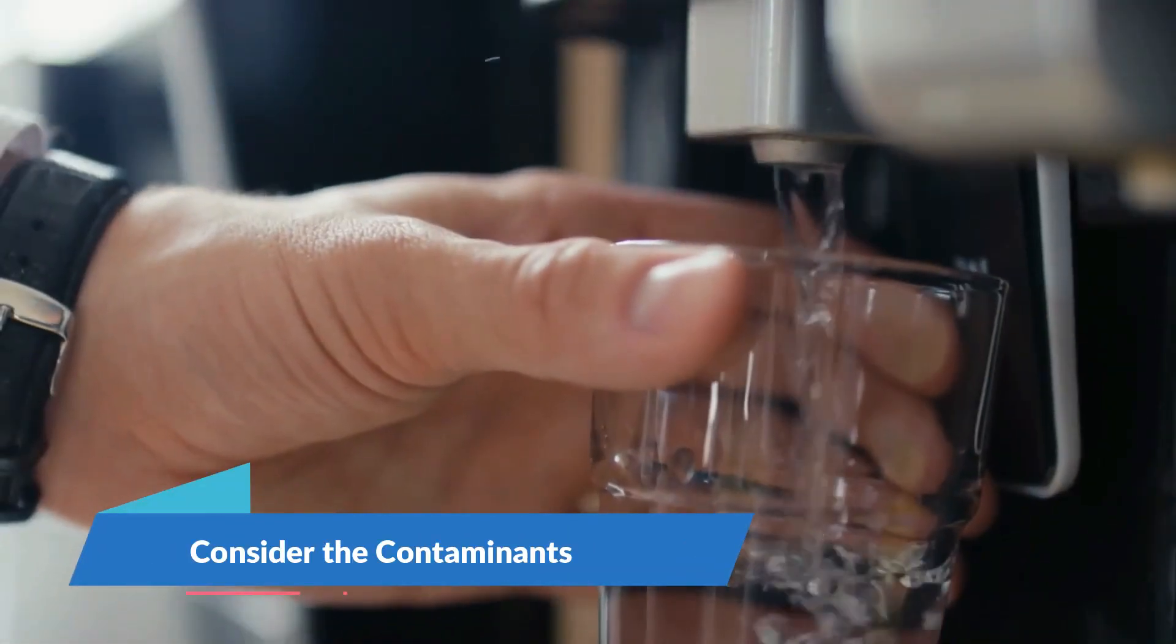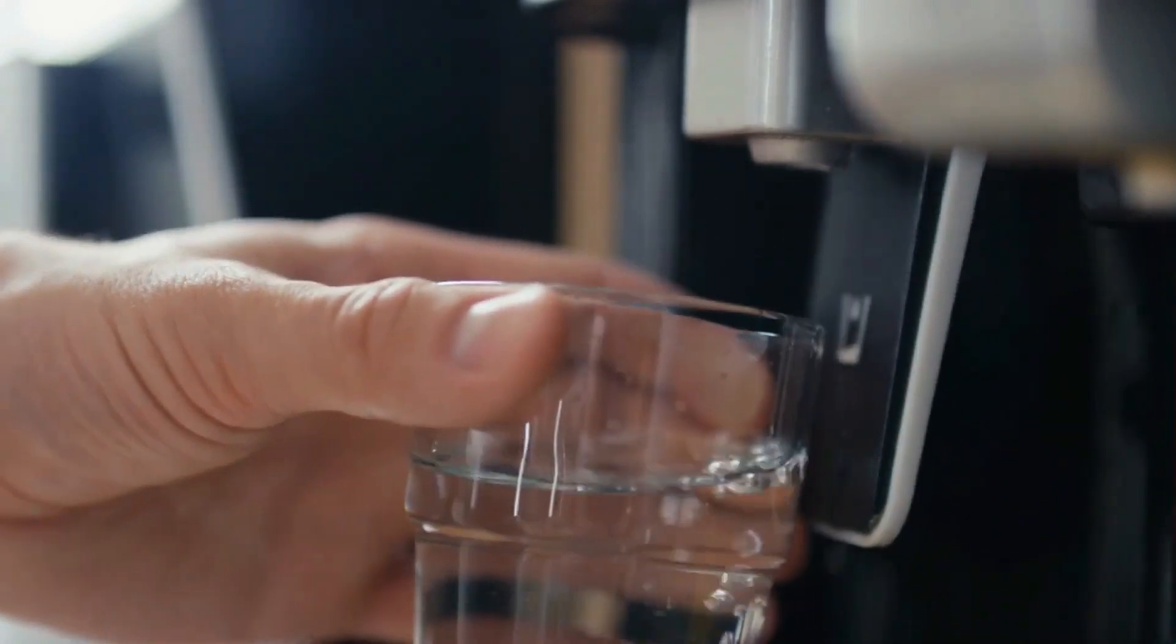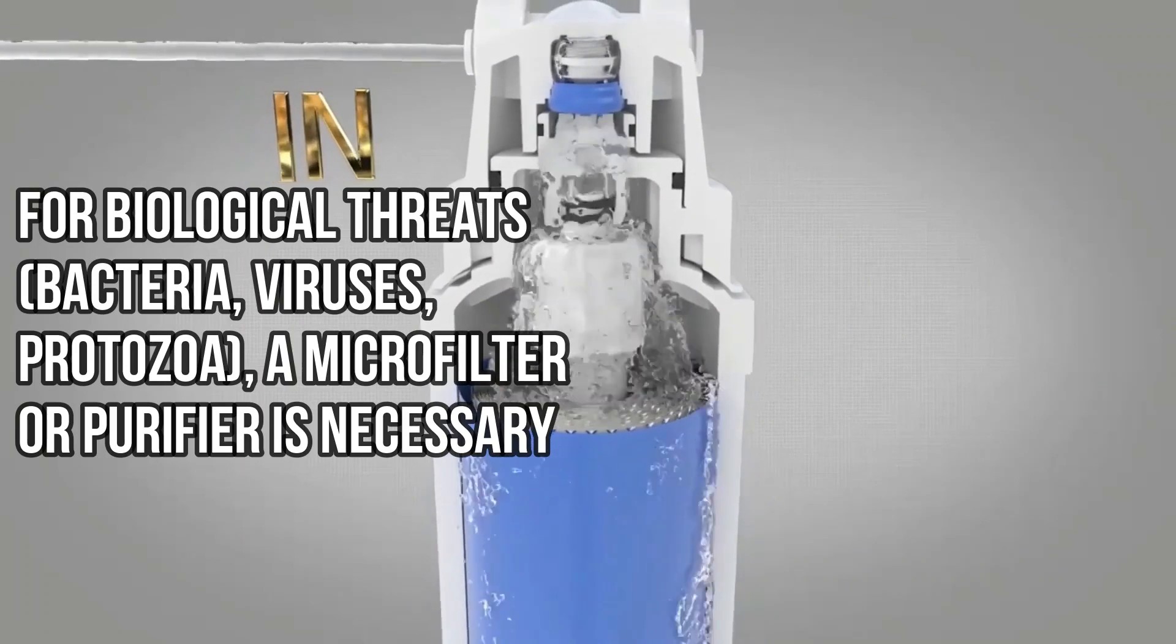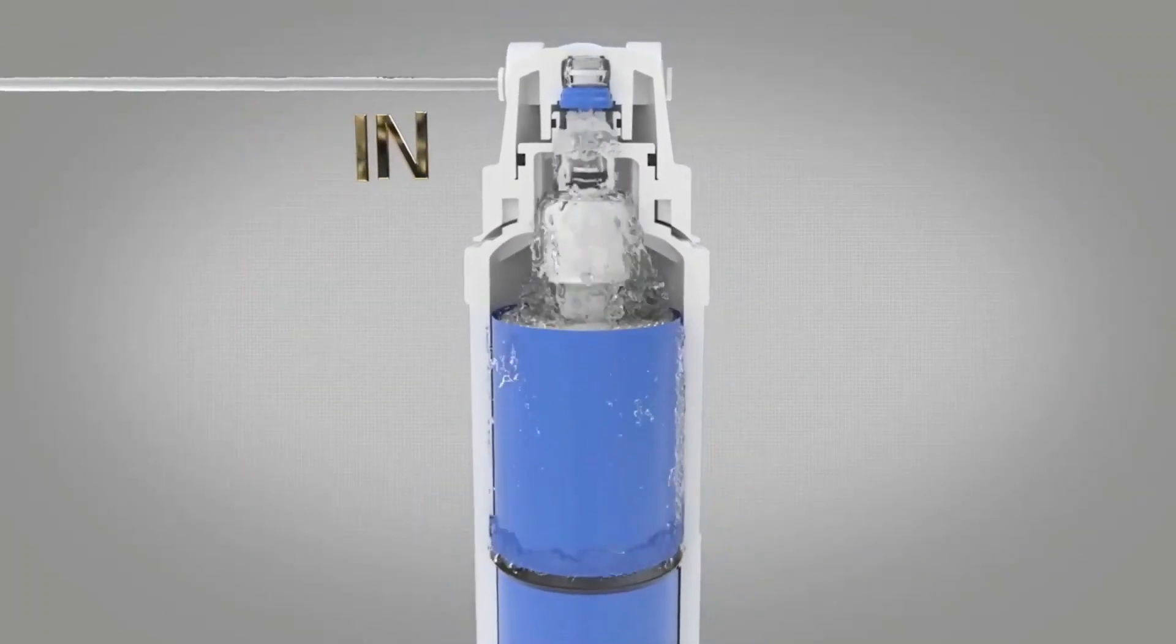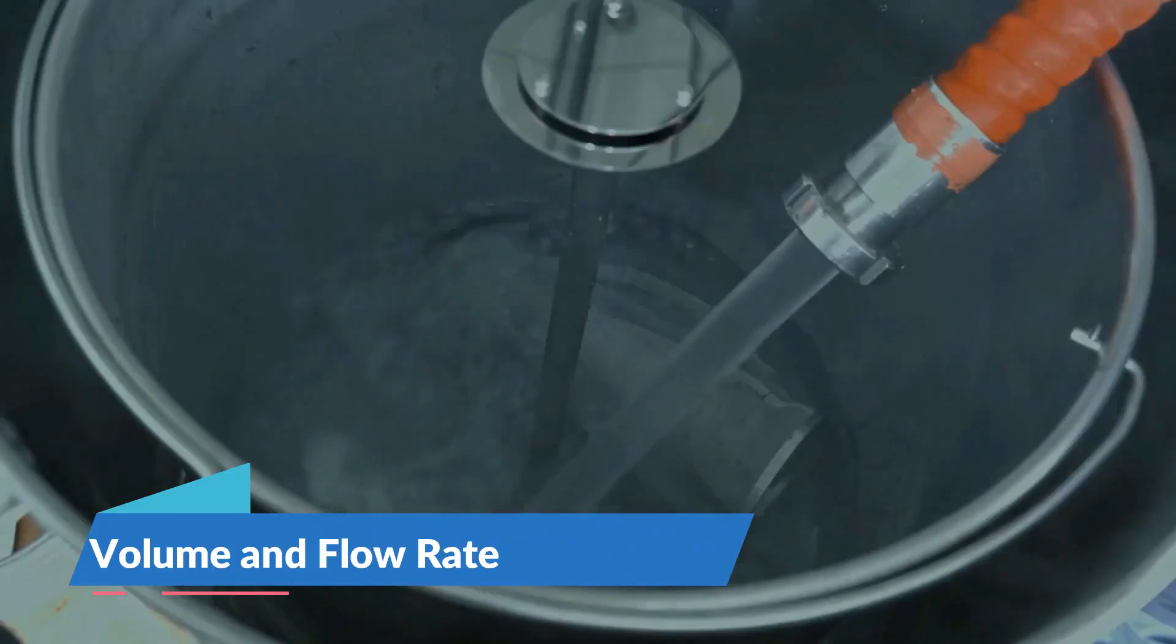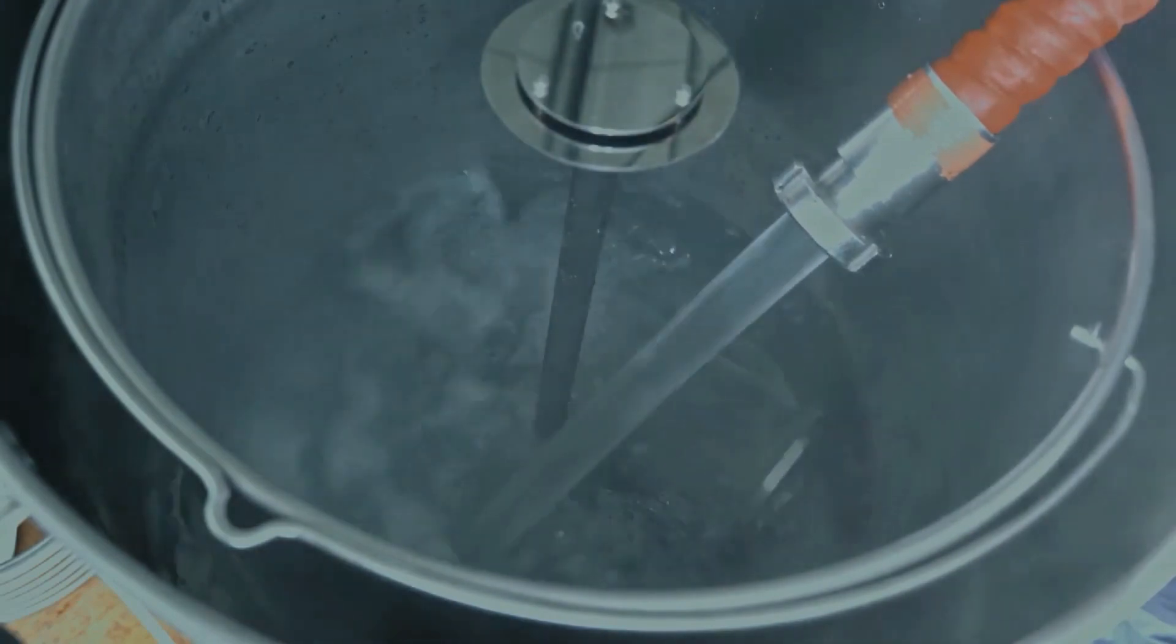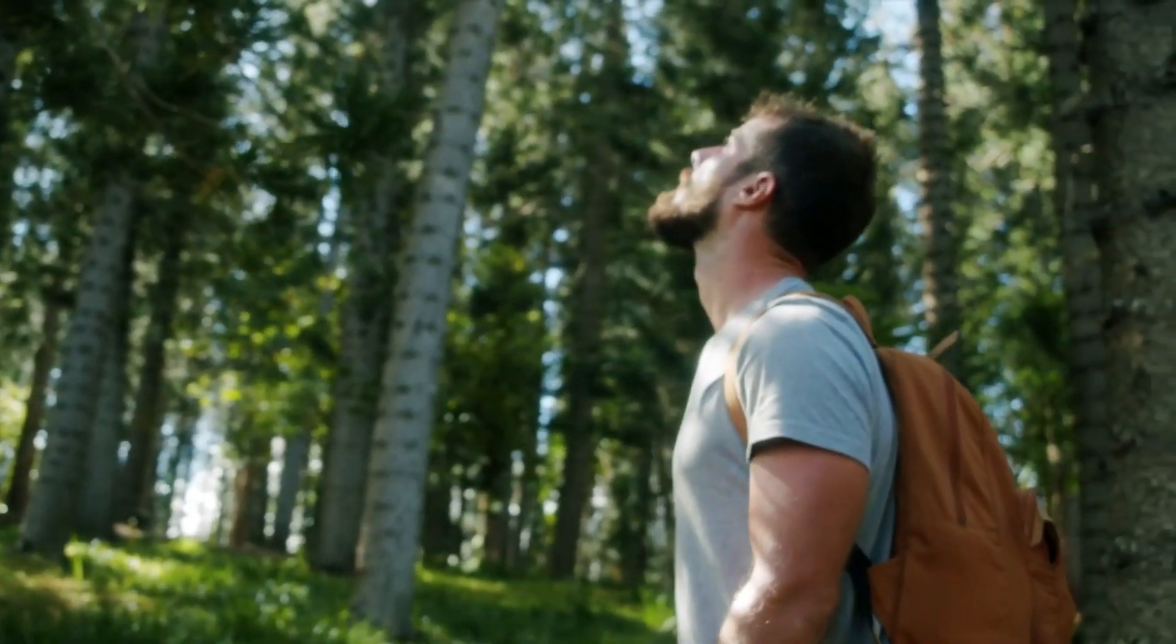How to choose a filtration system. Consider the contaminants: Different filters are designed to remove specific types of contaminants. For biological threats - bacteria, viruses, protozoa - a microfilter or purifier is necessary. For chemical pollutants, a filter with activated carbon is beneficial. Volume and flow rate: Consider how much water you need to filter daily. Larger groups or families will benefit from high-volume gravity filters, while solo travelers might prefer a small portable filter.